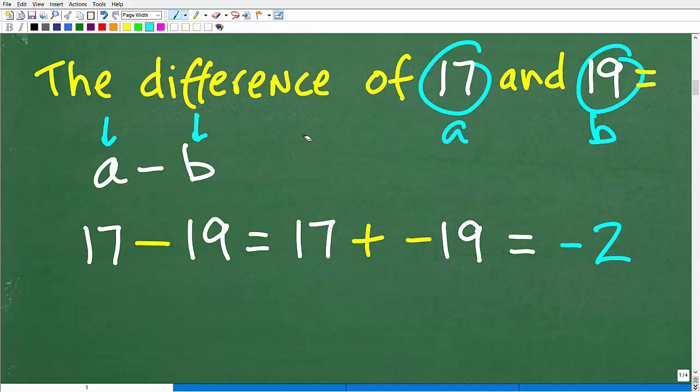But before I show you that, let's go ahead and just review something here. So in math, what I can do is I can change a subtraction problem to an addition problem. And the way I can do that is change this subtraction operator into an addition operator, but scoot that negative sign over to the number to the right. So 17 minus 19 is the same thing as 17 plus negative 19.